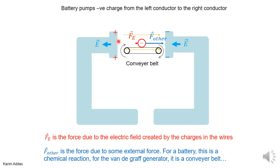Due to this shift in charge, you get extra positive charge on the left and extra negative charge on the right. The positive charge makes an electric field inside the wire; the negative charge makes an electric field towards itself inside the wire. The force F_other represents forces trying to move the charge opposite to the direction it naturally wants to go.